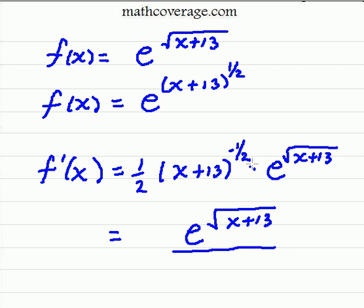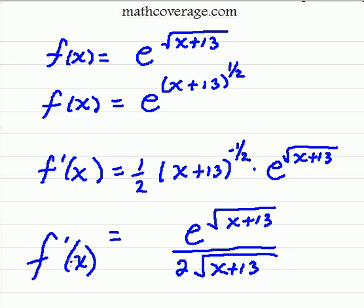And remember that because it's a negative one-half, it's really just a square root. Now I'm rewriting this two here, bringing it in the bottom. And so we have the square root of x plus 13, and that's our f prime of x is equal to.